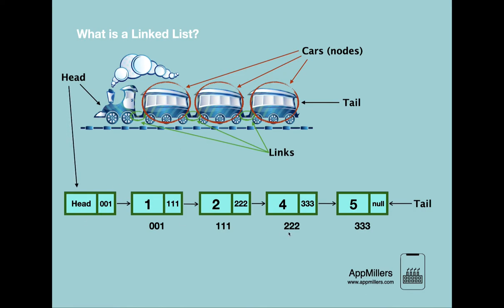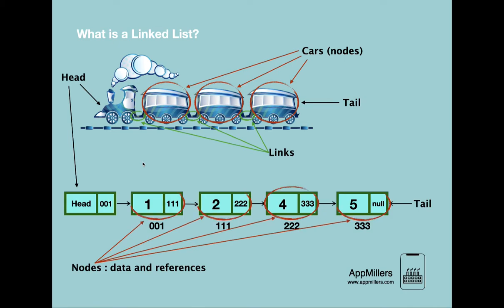This structure resembles the train structure. Just as in the train we have a head and a tail, in the linked list we have a reference to the first node which is called head. The nodes have values in them, and there are links between nodes that join them together. Finally, the last node is called the tail, because its pointer is null and there is no link to any further node.